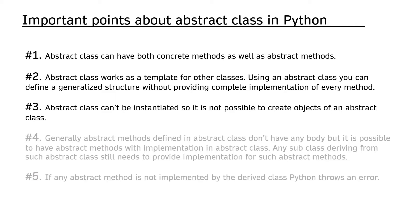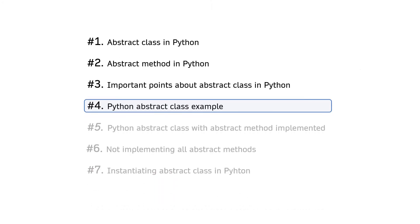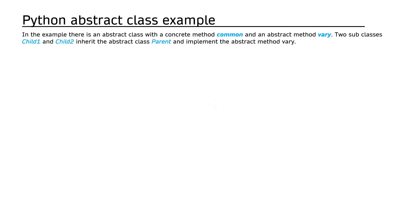Fourth, generally abstract methods defined in an abstract class do not have a body, but it is possible to have abstract methods with implementation in an abstract class. Fifth, if any abstract method is not implemented by the subclass, Python will throw an error.